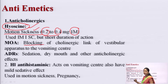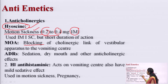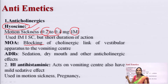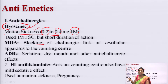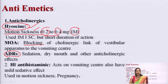The mechanism of action of anticholinergics is that they block the cholinergic link of the vestibular apparatus. The vestibular apparatus is one of the sources of afferent impulses that induce vomiting. By blocking this cholinergic link, the emesis which would be induced gets suppressed and blocked. Adverse drug reactions of hyoscine include sedation, dry mouth, and other anticholinergic effects.